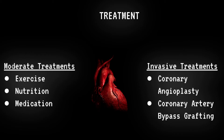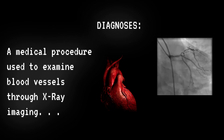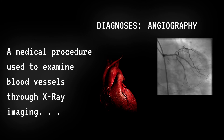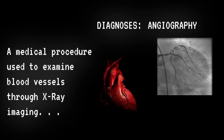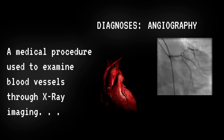Coronary artery bypass grafting is a more invasive treatment than coronary angioplasty, and this is a procedure where another blood vessel is transplanted onto the diseased coronary artery. This allows blood to go around the blockage by giving blood an alternate direction to travel. Coronary artery disease is diagnosed through angiography — angio meaning blood vessel, graphy meaning image — and this is a technique where x-rays of blood vessels are used to observe blood flow. On the right is an example of what an angiography x-ray would look like.